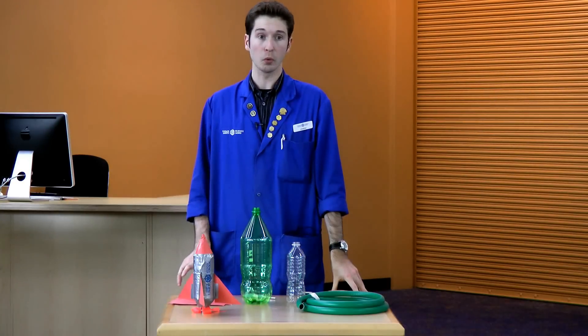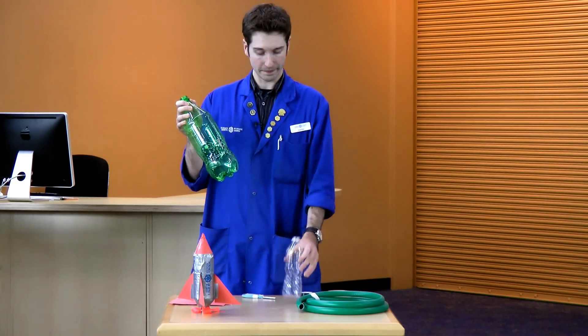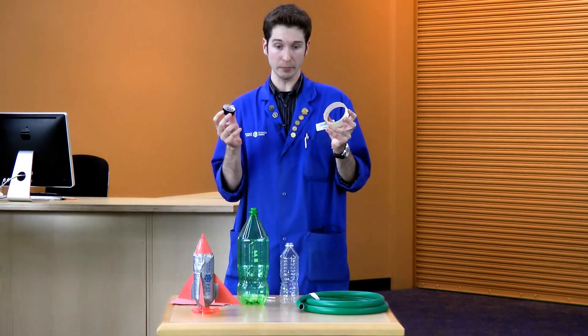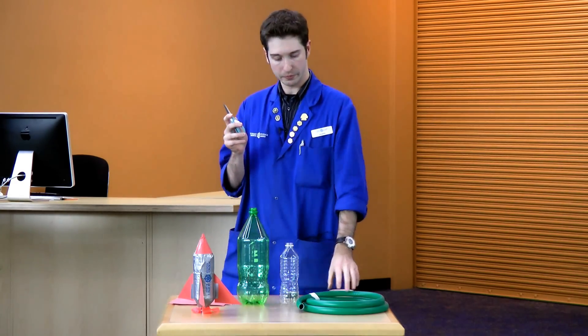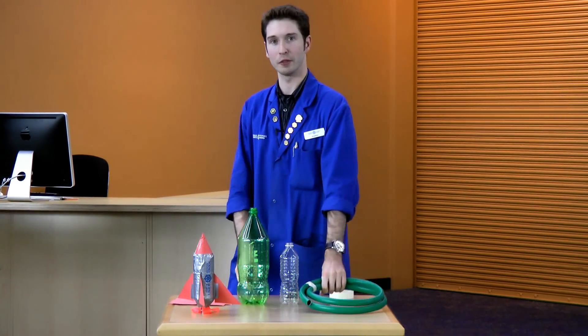So first I'll tell you what you'll need to build the stomp rocket. You'll need a big pop bottle, a small water bottle, masking tape, electrical tape, scissors and some garden hose. And then if you want decorations for your rocket you can add those too.